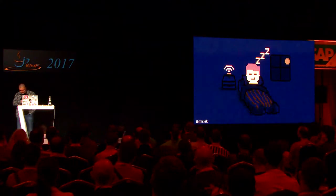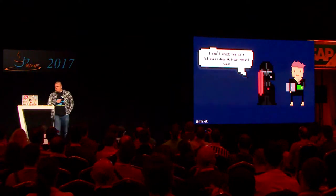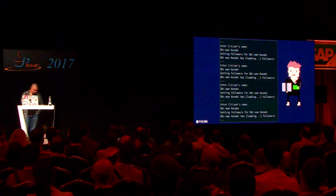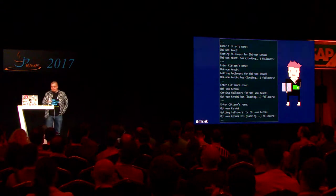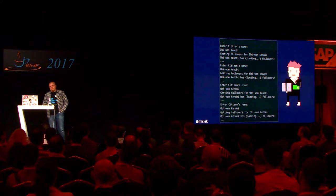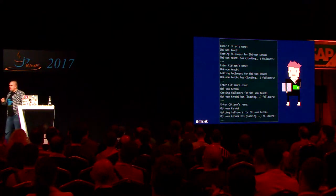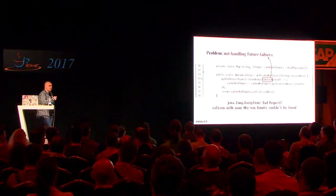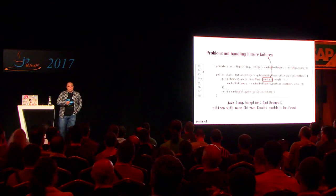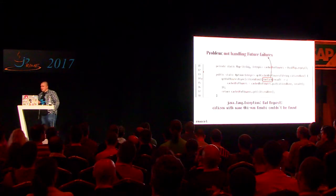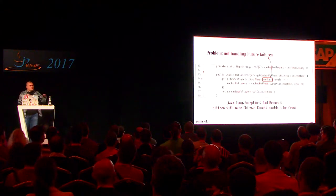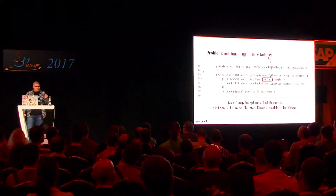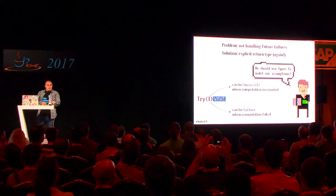Everything works fine, but one night our telephone rings again. This time the client wanted to check how many followers Obi-Wan Kenobi has, and it failed. We fire up our console application and run a query — Obi-Wan Kenobi shows 'loading followers' for one minute. The problem is we didn't cover the failure case. The database client throws an exception whenever it can't find a citizen. We also need to handle technical exceptions like timeouts. This is where the Try type comes in — it models computations that may succeed or fail, with two subtypes: Success and Failure.